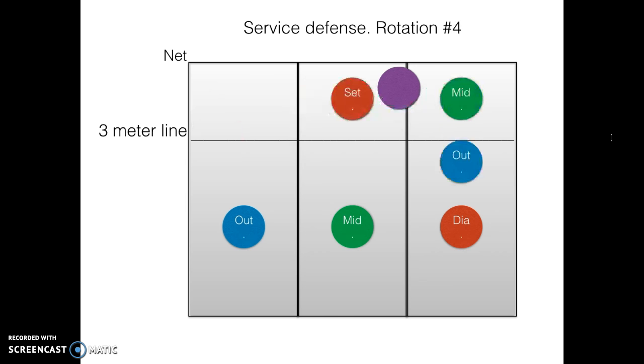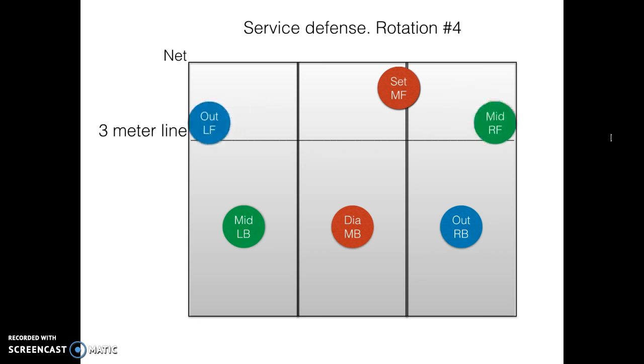Alright, so rotation four. Note that it's pretty similar. The setter can already be in the setting position, and note that mid on right front moves to the right a bit so that he doesn't block the vision of the outside on right back. I didn't show this in earlier rotations, but front players always move away so that back players have vision and space to pass.